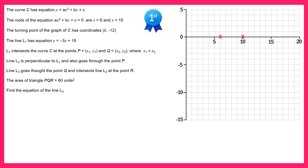We're then told the turning point of the graph has coordinates k, negative 12. Since quadratic graphs are symmetrical, the turning point's x-coordinate will always be halfway in between the roots. The roots are 6 and 10, so halfway in between those is 8. So the value of k will be 8 and the turning point will have coordinates 8, negative 12.